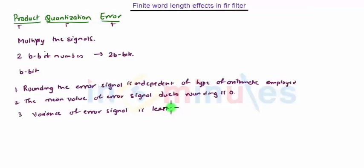Now if we compare, the analysis of product quantization error is similar to analysis of quantization error due to analog to digital converter. But here the difference is, it is necessary to define the noise transfer function which actually depends on how the structure is developed.